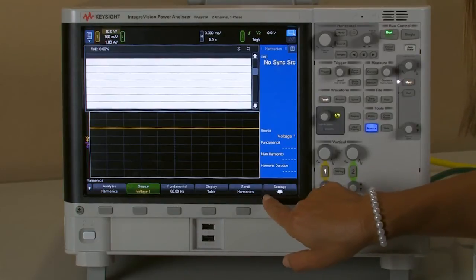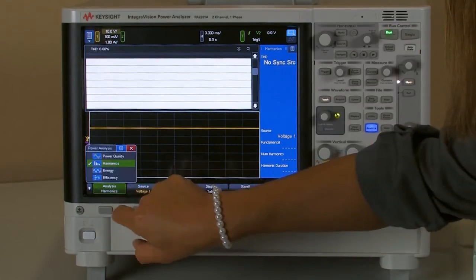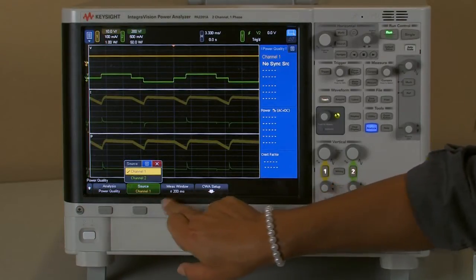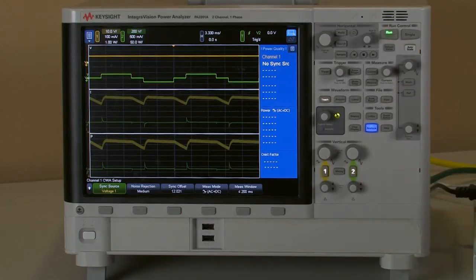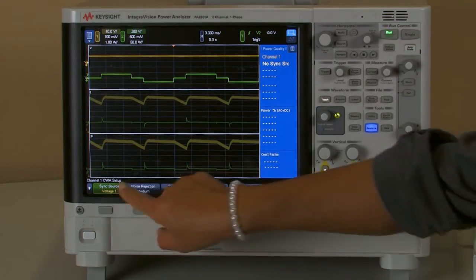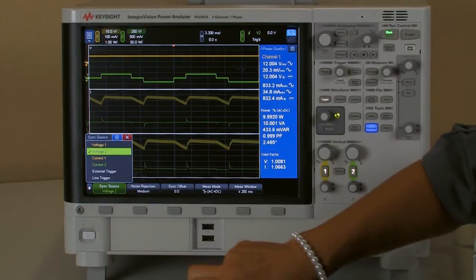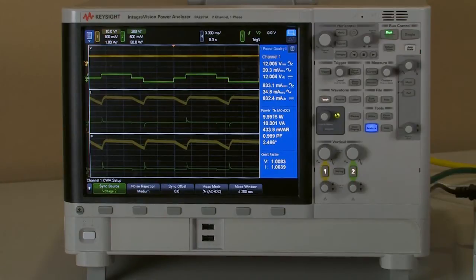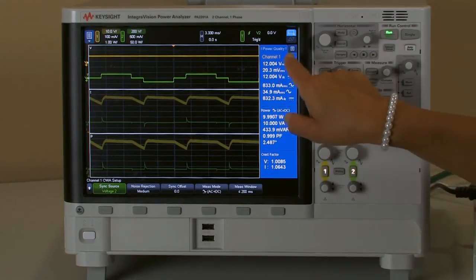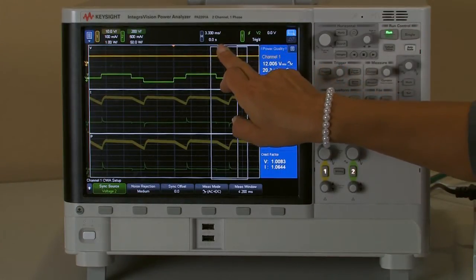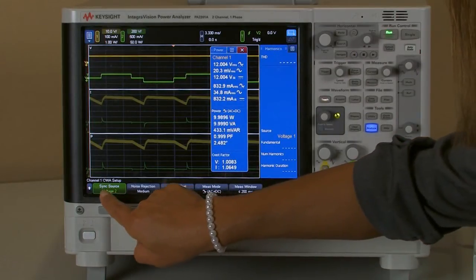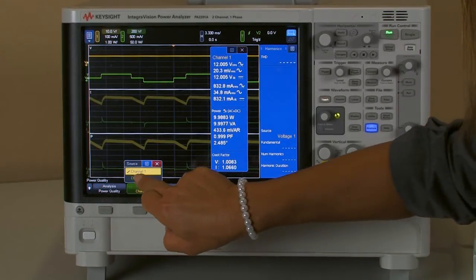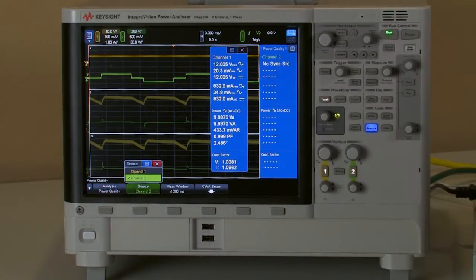So first I have to set up when I want to go to power quality, the whole cycle analysis mode. It has to be synchronized to either AC signal or the line so it can find edges. Once I have it synchronized now I have power quality of first channel and simultaneously I can also observe power quality of second channel.